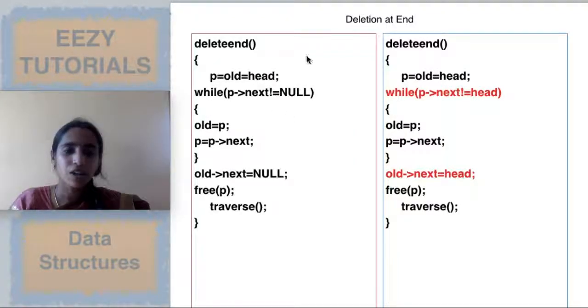Hope you understood singly circular linked list. If you are learning singly linear linked list and then coming to circular only you will be able to follow correctly, else you will be having some confusion. So first thoroughly learn singly linear linked list. Write the code by yourself. See the visualization and write the code by yourself and then come to circular linked list. It will be very easy for you.